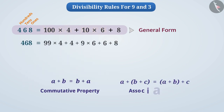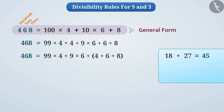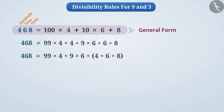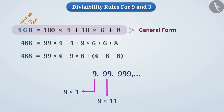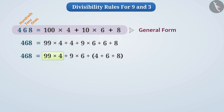Similarly, we can write 10 multiplied by 6 as 9 multiplied by 6 plus 6. This gives us 468 equals 99 multiplied by 4, plus 4, plus 9 multiplied by 6, plus 6, plus 8. Using commutative property and associative property, we can change their order and group them. If the sum of 2 or more numbers is divisible by 3 or 9, then the sum is also divisible by 3 or 9. We can write numbers like 9, 99, 999 as 9 multiplied by 1, 9 multiplied by 11, 9 multiplied by 111, and so on. Since 9 is the factor of each number in this pattern, all these numbers are divisible by 9. Similarly, since 3 is a factor of 9, all the numbers in the pattern are also divisible by 3. In this way, 99 multiplied by 4 and 9 multiplied by 6 are each divisible by both 3 and 9.